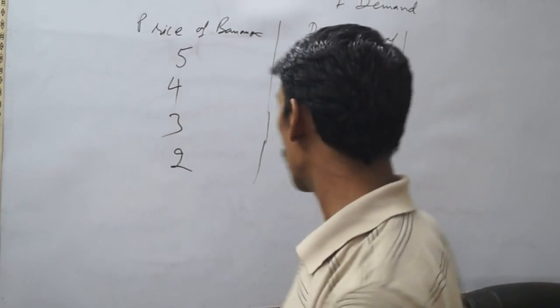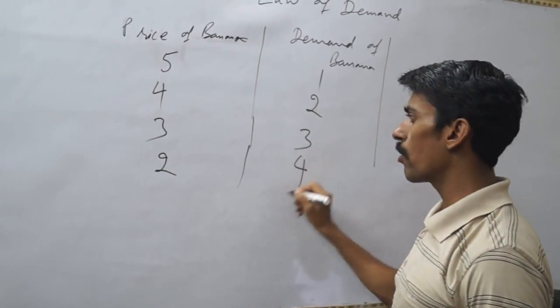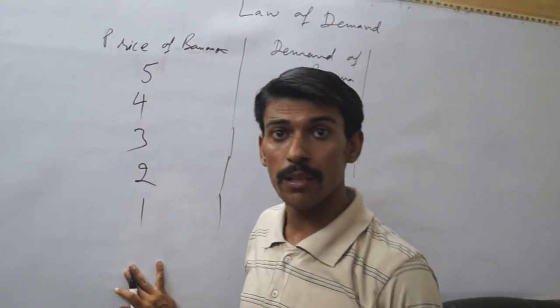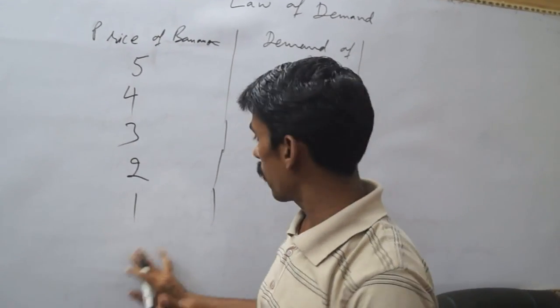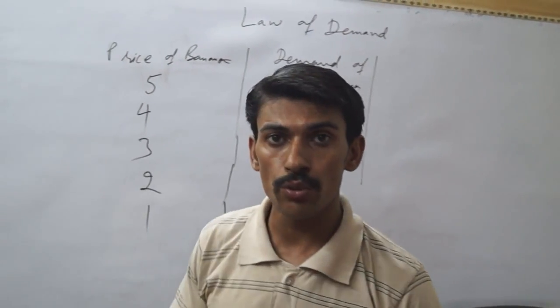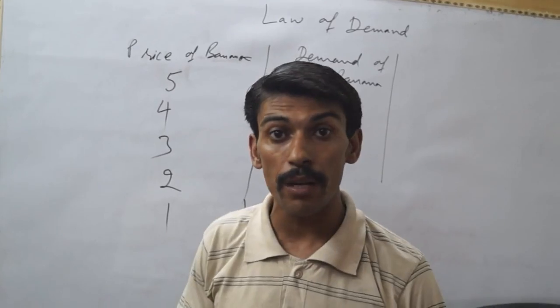If the price is two, demand will rise to four. And if the cost of the banana is at the lowest price of one, I will demand five bananas. I can consume, I can buy the quantity of five bananas.